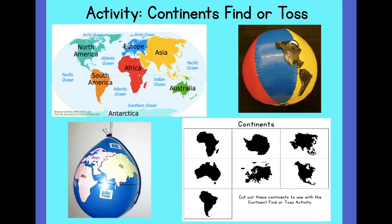We even have a fun activity you can do to practice identifying the continents. If you have a beach ball or a balloon that you can blow up, use a marker to draw the equator and prime meridian and then draw the continents, or you can use the continents from your packet and cut those out and glue or tape those to your balloon or ball. Once you have this finished you're ready to play. Toss your balloon or ball and name the continent that your thumb lands on.